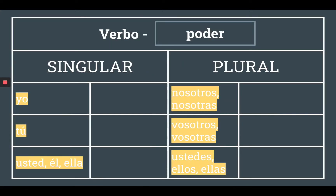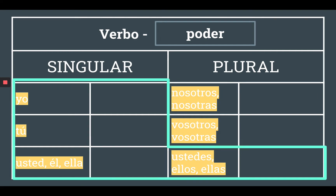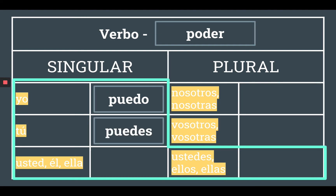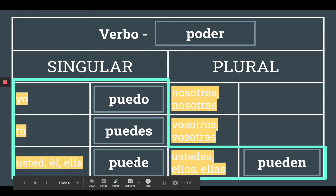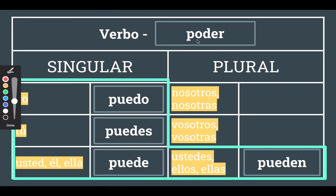Stem-changing verbs are sometimes also referred to as boot verbs or shoe verbs. If we were to draw a figure around the forms that do stem-change — which is everything except for nosotros and vosotros — it would look similar to a boot. So the yo form is puedo, I can or I am able to. Tú puedes. Usted, él, ella puede. Ustedes, ellos, ellas pueden. All of these forms changed from an O to a UE.